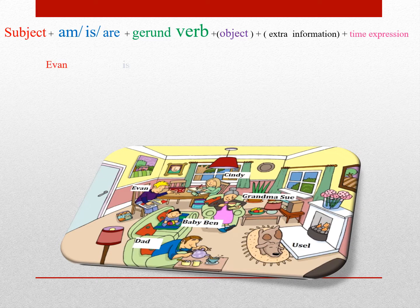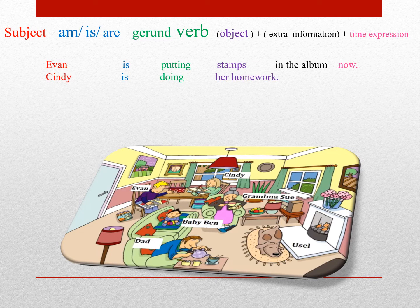میریم سراغ مثال. برای مثال میخواییم بگیم ایوان همین الان داره تمبرها رو توی آلبوم میذاره. به همین ترتیب میتونید جملات دیگه رو در مورد سیندی، گراند ماسو، بیبی بن، یوسل و دد بگید. سیندی is doing her homework. گراند ماسو is drinking tea.